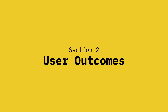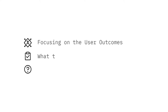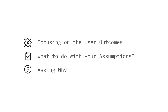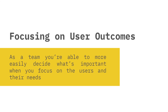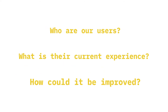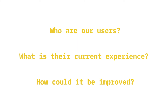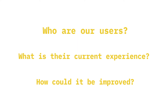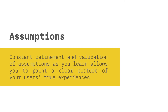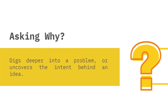In section 2 of this video, we will be looking into the first principle in more depth — focusing on user outcomes, what to do with your assumptions and asking why. As a team, you are able to more easily decide what's important when you focus on the users and their needs by asking questions such as: who are our users, what is their current experience and how could it be improved. It is also important to recognize your assumptions. Constant refinement and validation of assumptions allow you to paint a clear picture of your users' true experiences. Asking why digs deeper into a problem or uncovers the intent behind an idea, ensuring problems are solved in the best possible way.